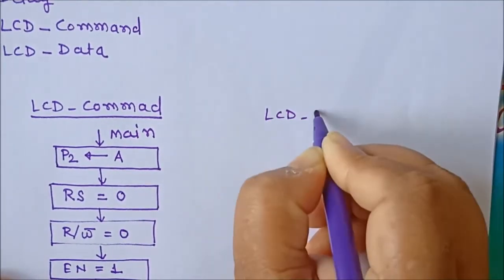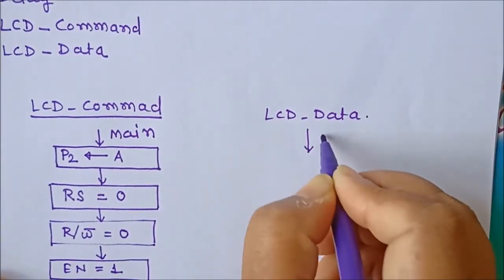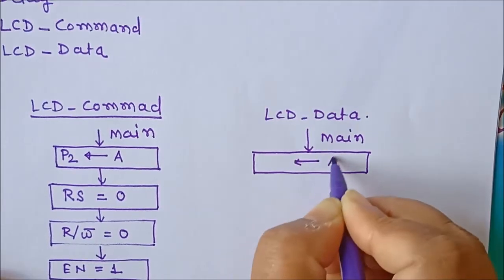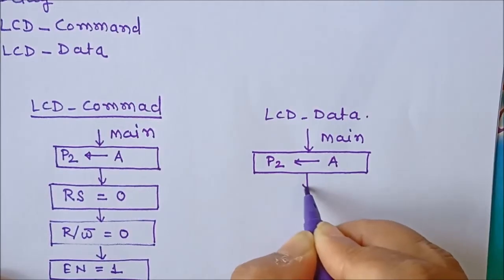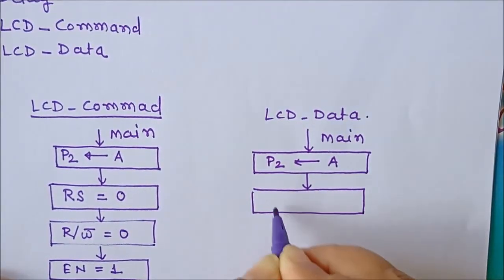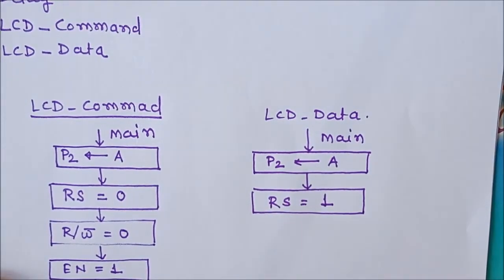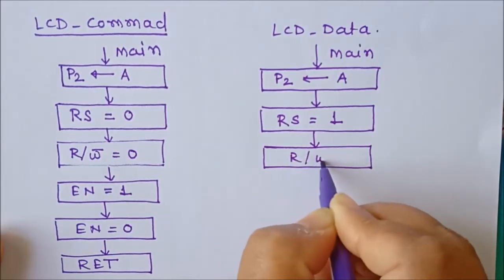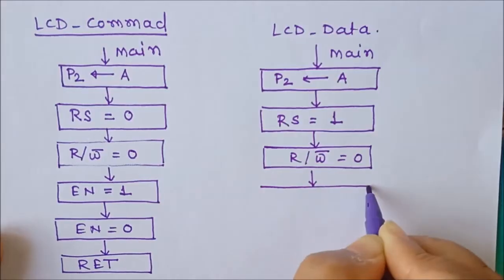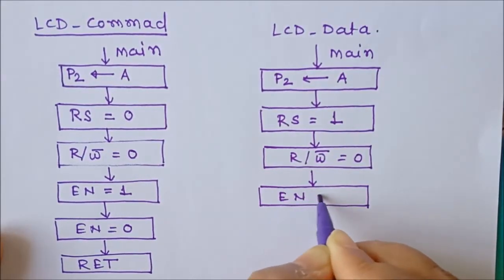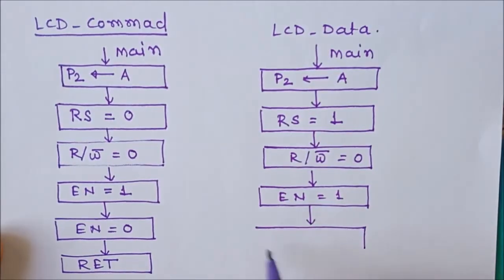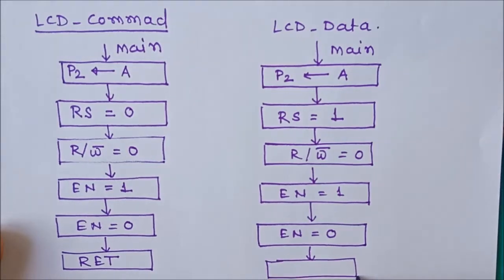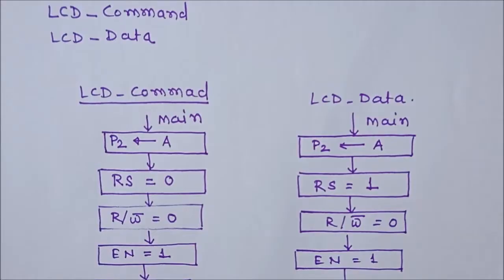In the same way we can draw the flowchart for LCD data subroutine. The ASCII value of the character comes from the main program. We place that ASCII value, which is in the accumulator, on the data bus — port P2. We select the data register by sending logic 1 on the RS terminal. Again we are performing a write operation so R/W should be 0. To latch the data we send a high-to-low enable pulse, then return to the main program. The only difference between the two subroutines is the selection of the register.